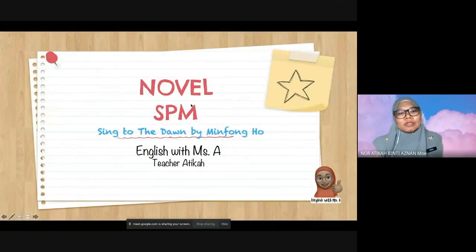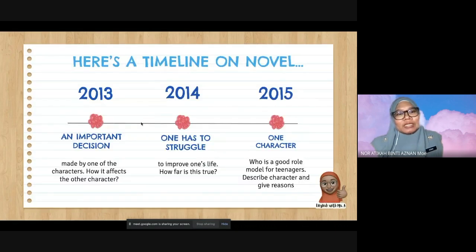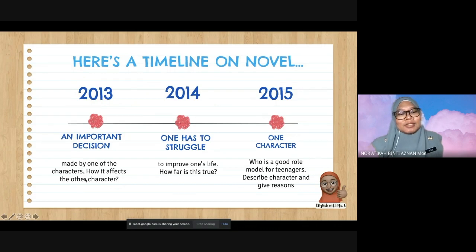This is a discussion, a revision on novel for SPM, 'Sing to the Dawn' by Minfong Ho. Let's take a look at the notes. Here's a timeline on novel questions. In 2013, the task was on an important decision made by one of the characters and how it affects another character — both singular.